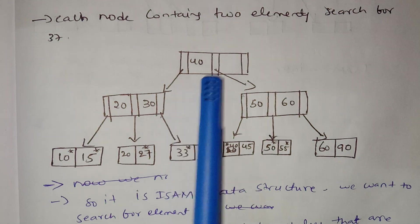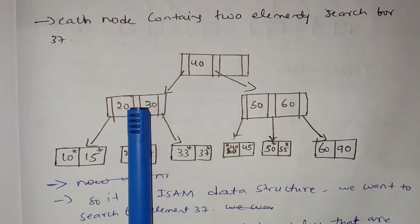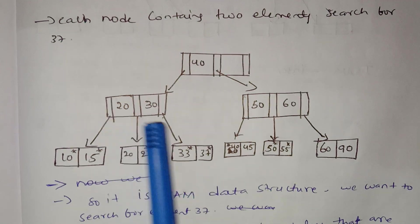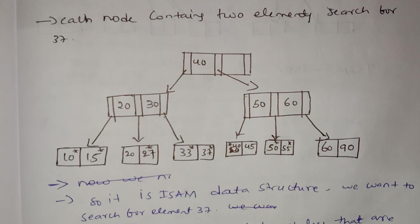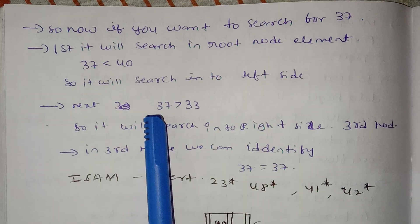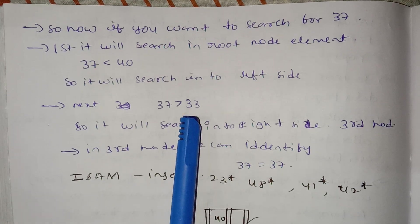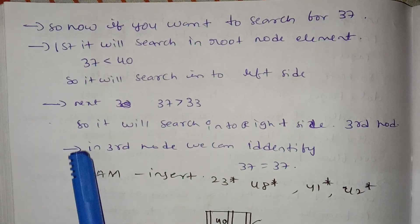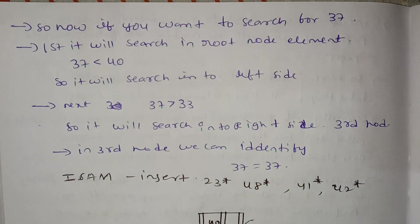We search for 37. Since 37 is less than 40, we go to the left subtree. Next, 37 is greater than 33, so we search on the right side of the 3rd node.